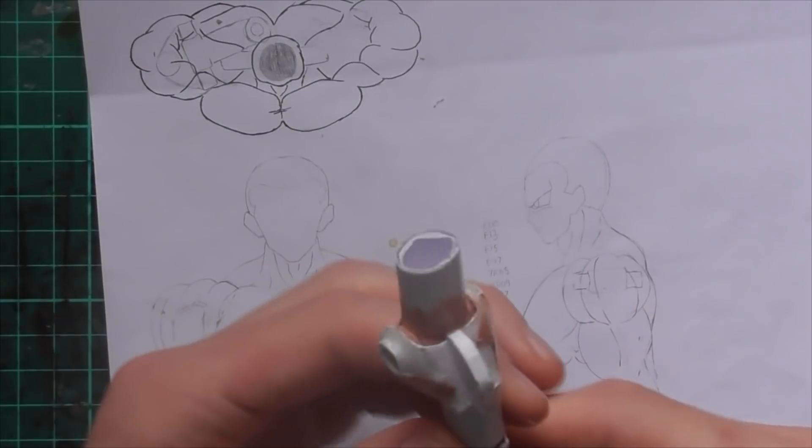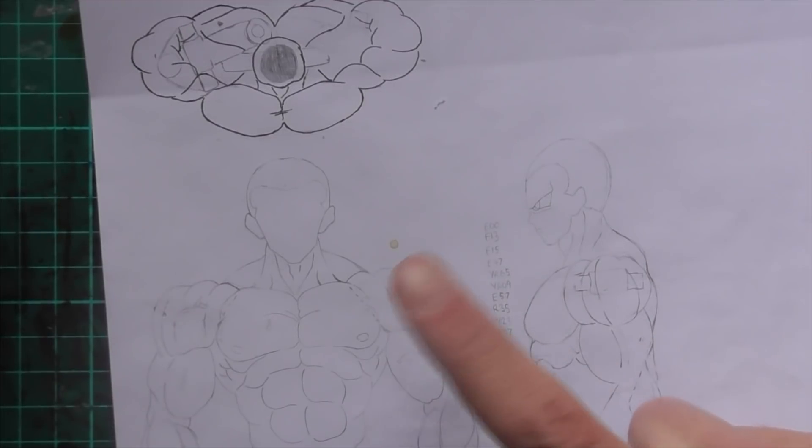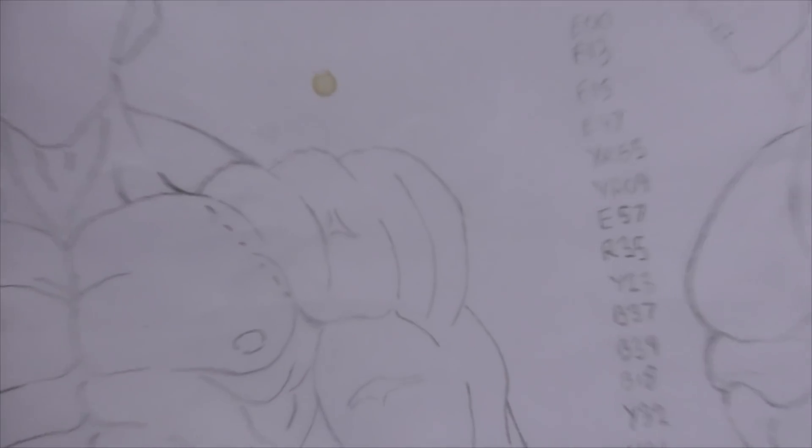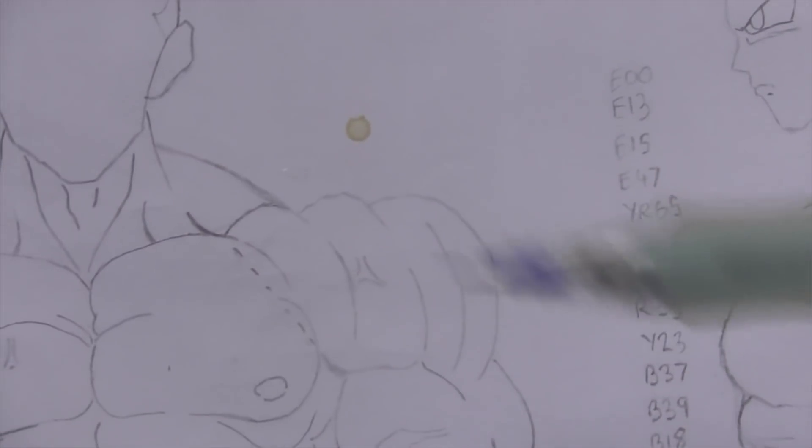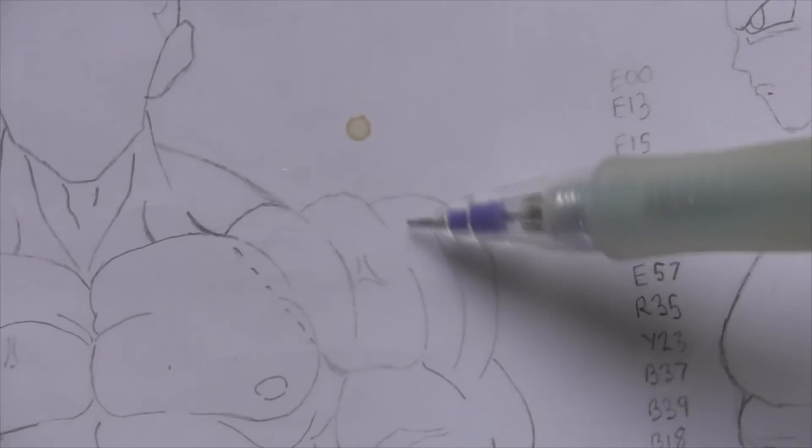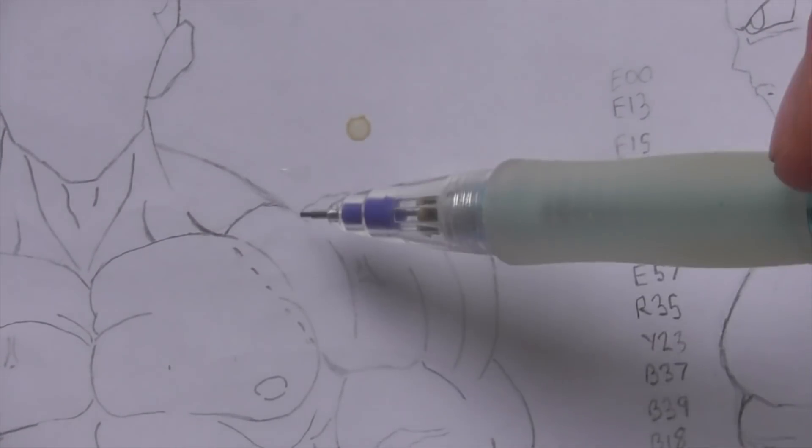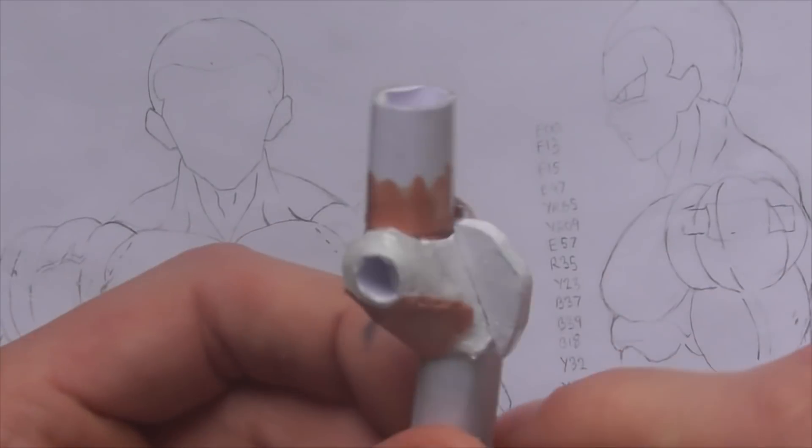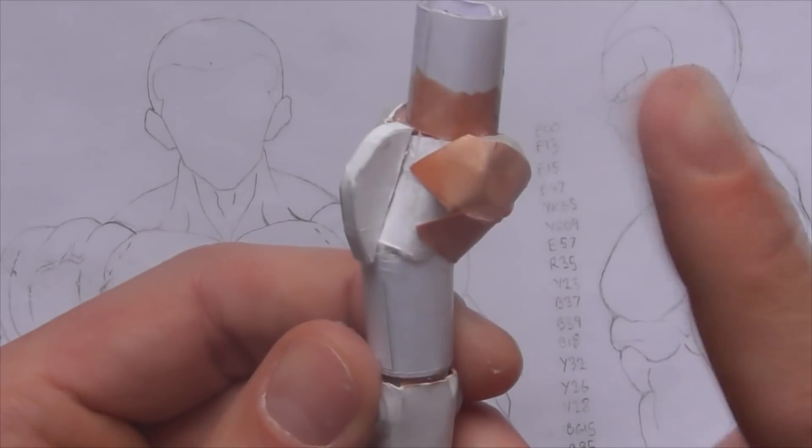Alright, so actually making the muscle. According to my drawing here, I can see that unlike Doomfist, this character has pretty distinct lines separating the three heads of the shoulder muscle. So I'm going to split the shoulder into three parts, one for each of the heads of the deltoid muscle.